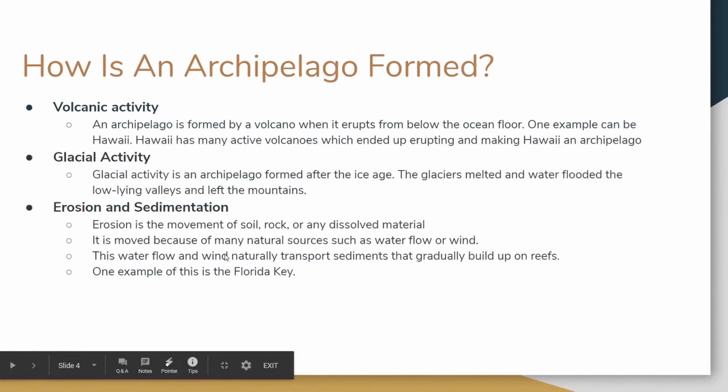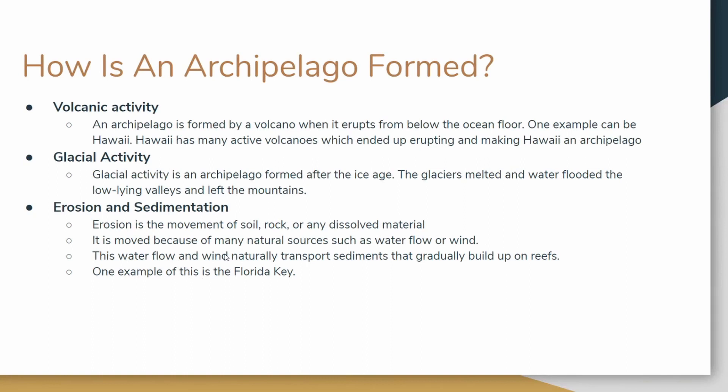Our next section is how is an archipelago formed? There are three ways an archipelago can be formed. The first one being volcanic activity, the second one is glacial activity, and the third and final one is erosion and sedimentation — which you've probably heard if you're in 4th or 5th grade.